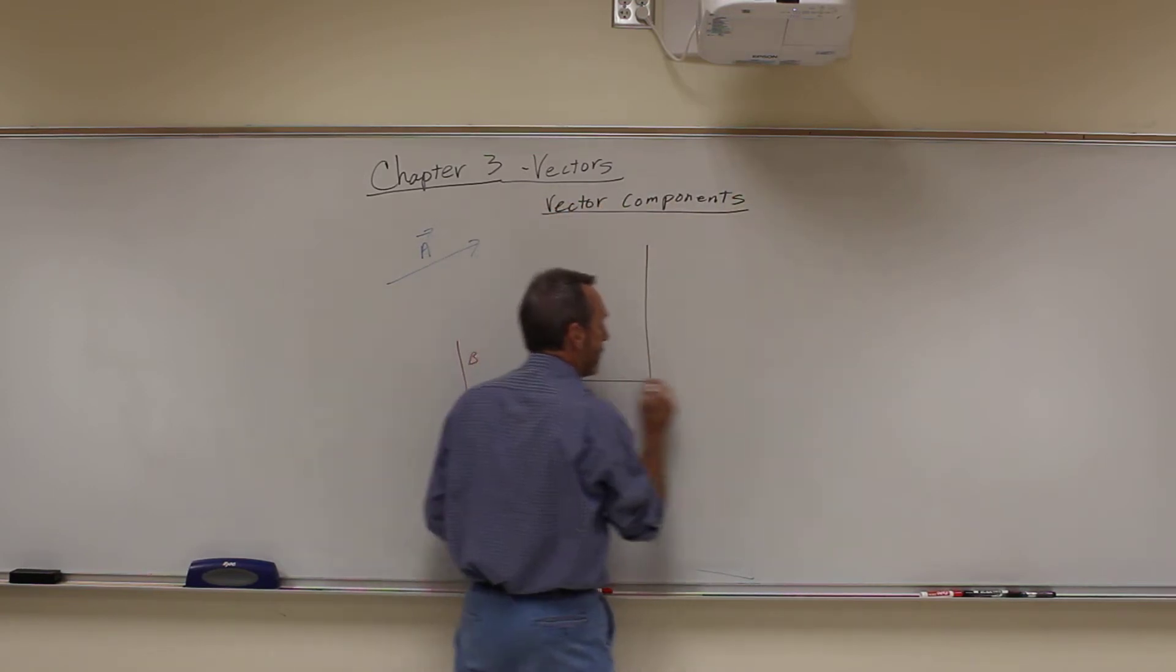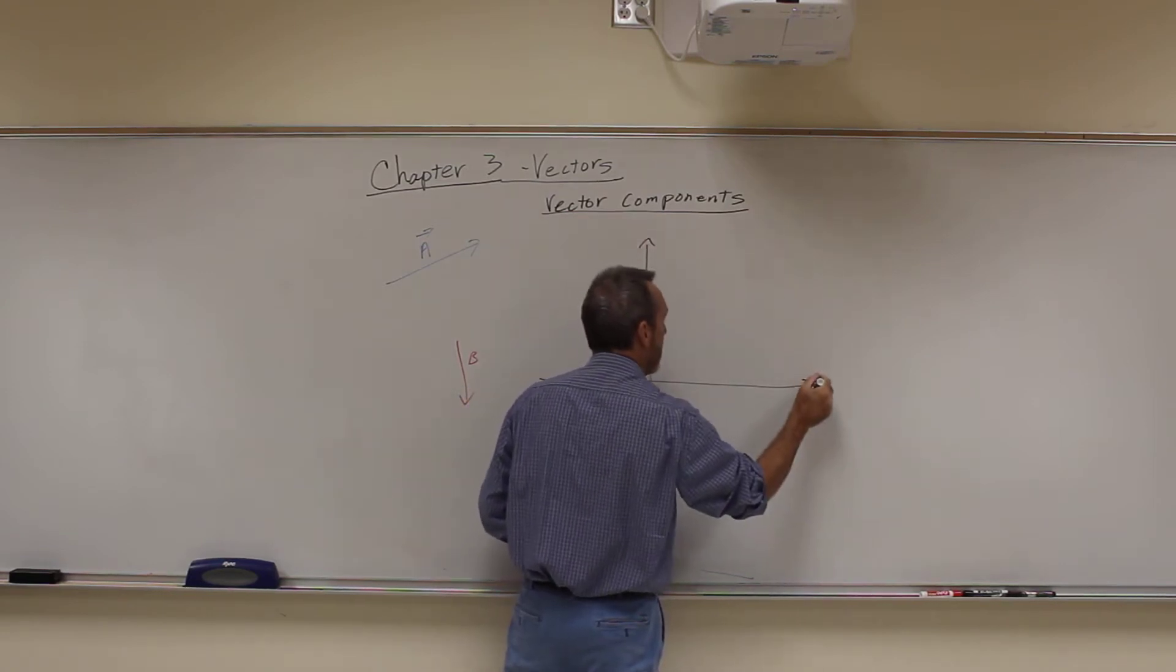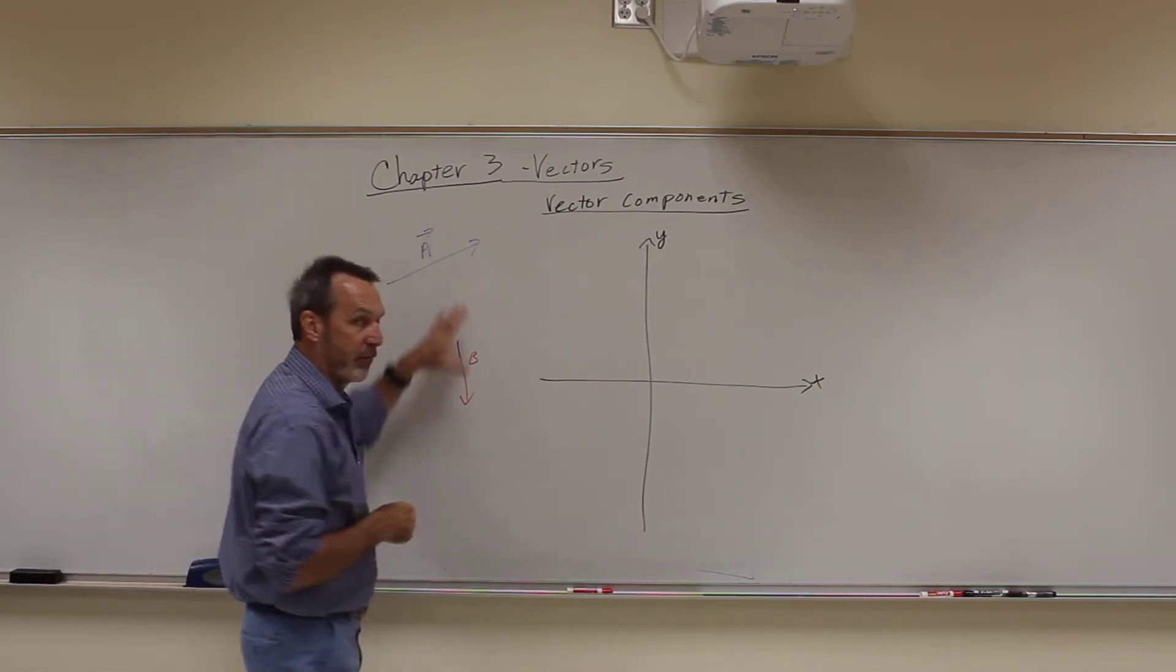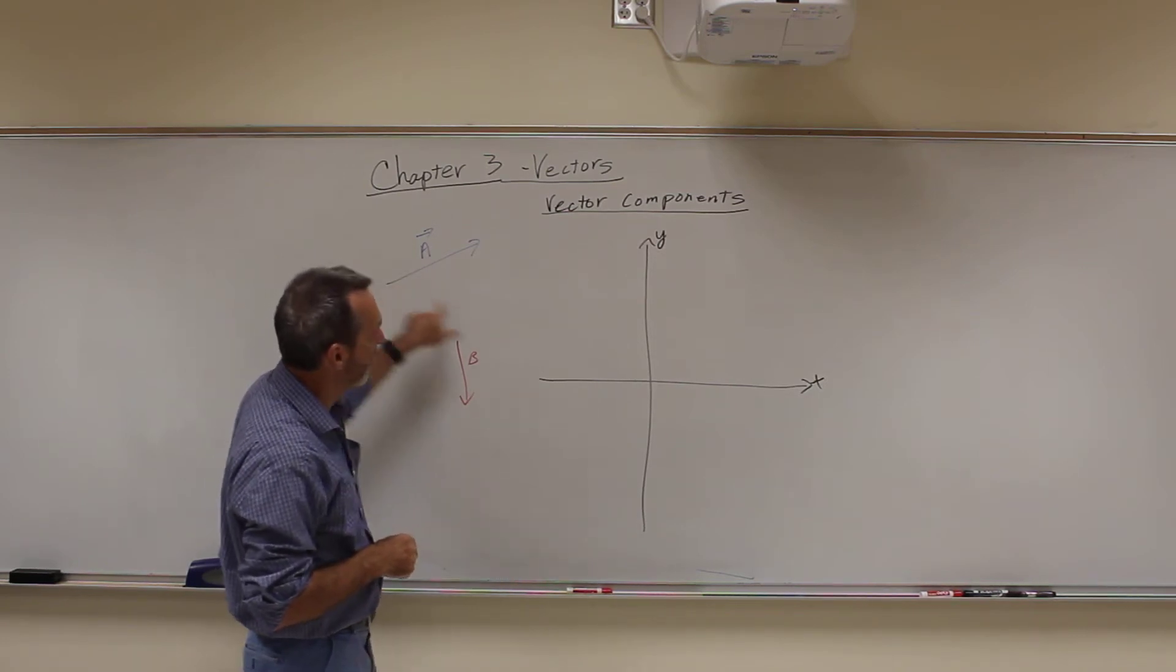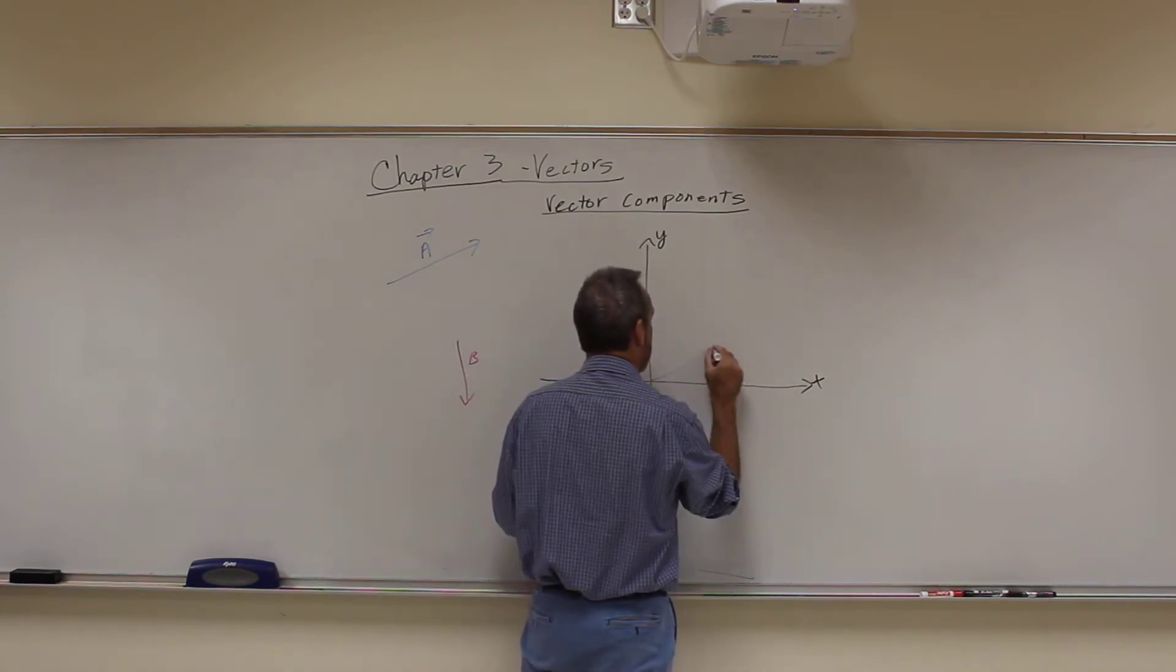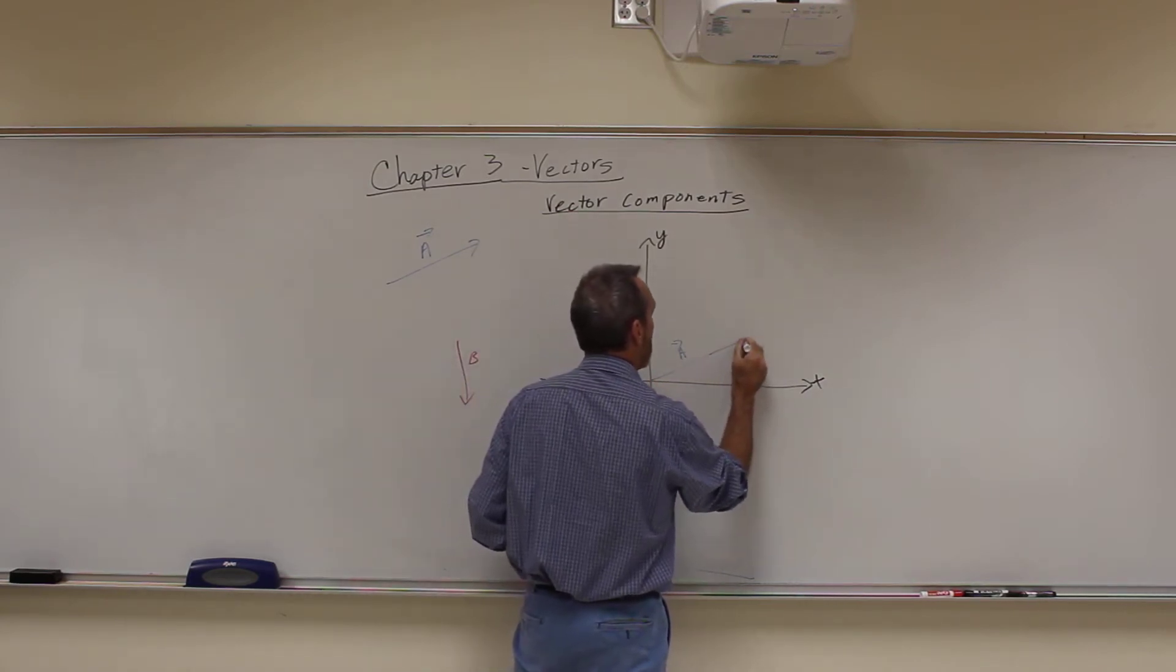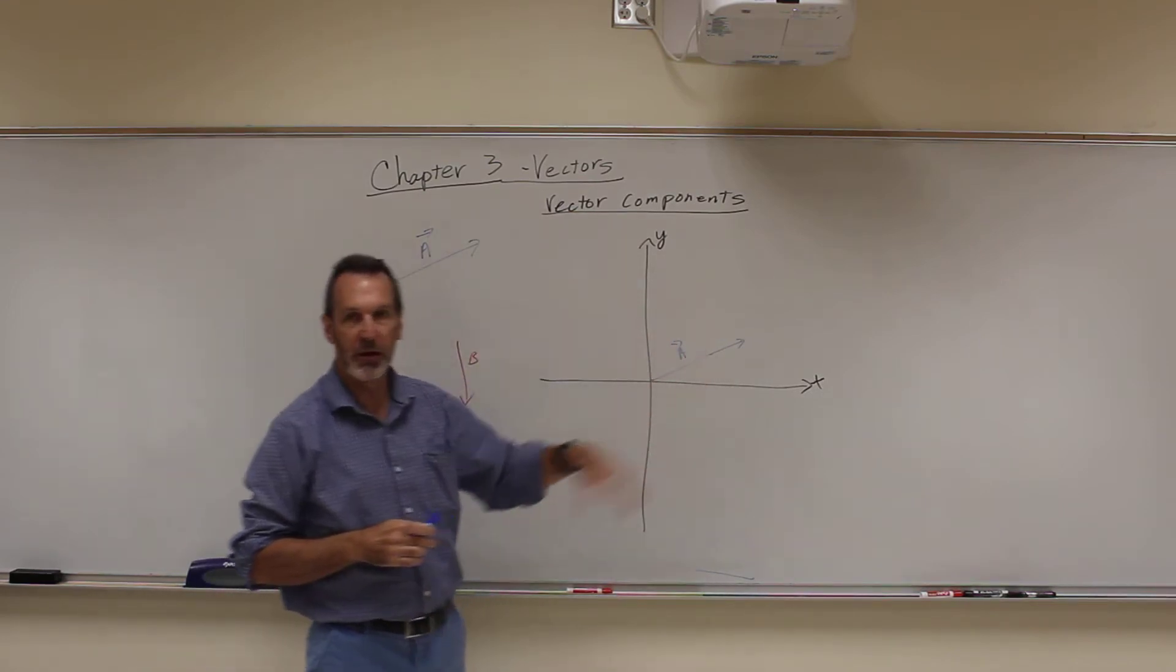And the way to do that, the way we're going to do it in here, there's multiple ways to do it, is we're going to use an XY system, coordinate grid. And remember, we can move vectors wherever we want. So I'm going to move vector A down here so the tail of it is on the origin of our system. So I'm going to put my vector A here. Same vector. Same vector. I just moved it to this position right here.